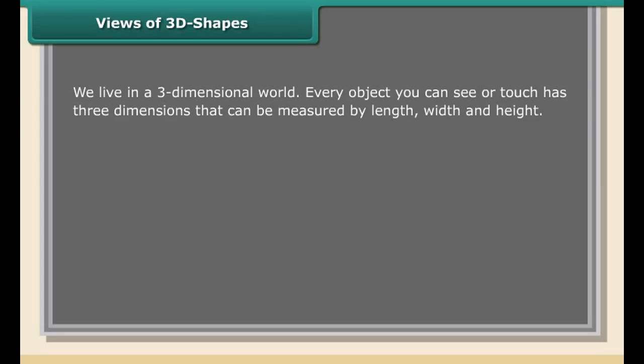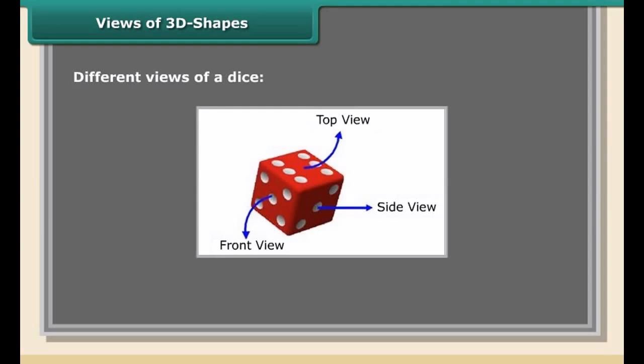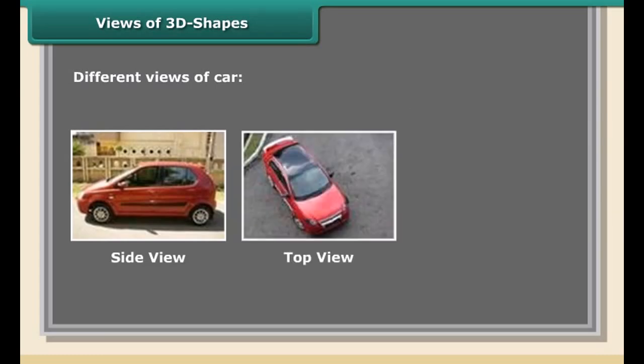Views of 3D shapes: we live in a three-dimensional world. Every object you can see or touch has three dimensions that can be measured by length, width, and height. For example, the room you are sitting in can be described by three dimensions, and the monitor you are looking at also has three dimensions.